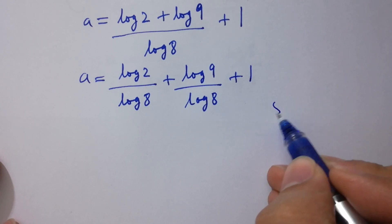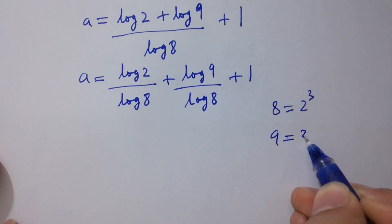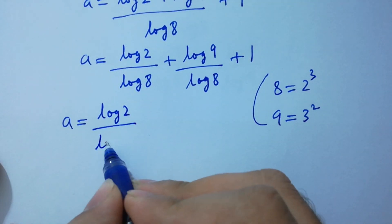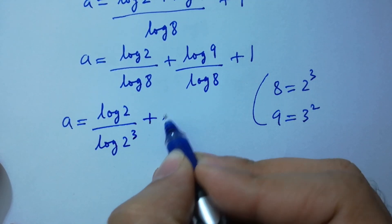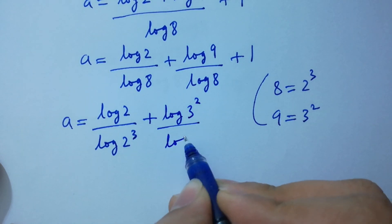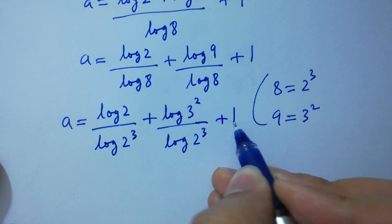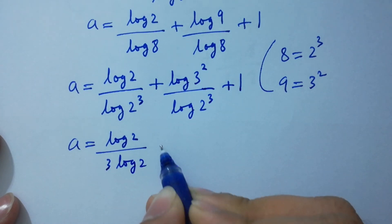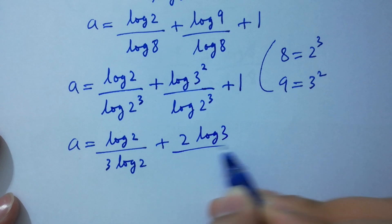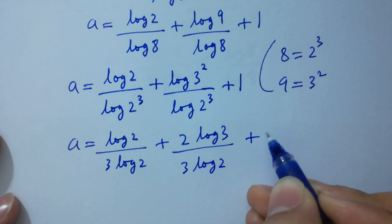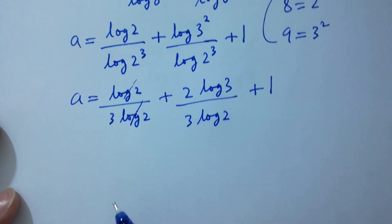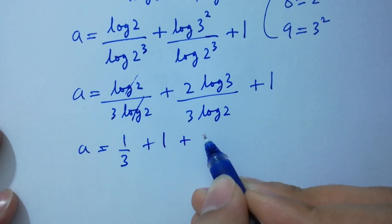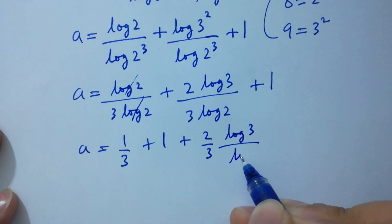A equals log 2 over log 8 plus log 9 over log 8 plus 1. Since 8 equals 2 cubed and 9 equals 3 squared, a equals log 2 over log 2 cubed plus log 3 squared over log 2 cubed plus 1, which gives a equals log 2 over 3 log 2 plus 2 log 3 over 3 log 2 plus 1. Log 2 and log 2 cancel.